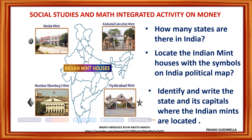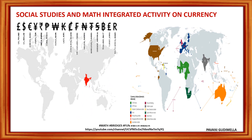This can be taken as an activity integrating social studies and math. You can ask children to locate the Indian mint houses with their symbols on the Indian political map, or identify and write the states and capitals where the Indian mints are located, along with neighboring states. You can also ask kids to bring a world map, write the different currencies of different countries, color it, and locate the foreign countries that helped manufacture Indian coins.